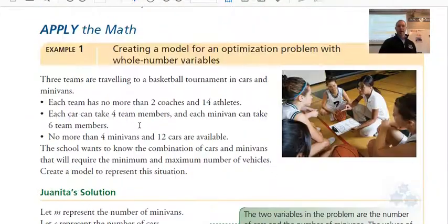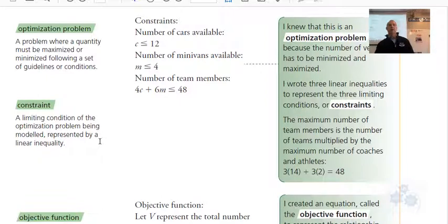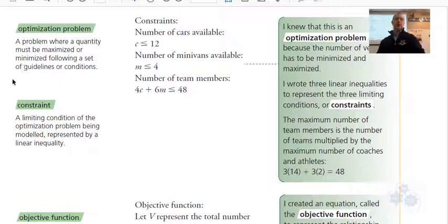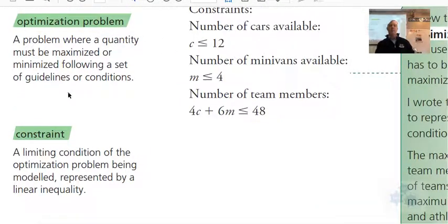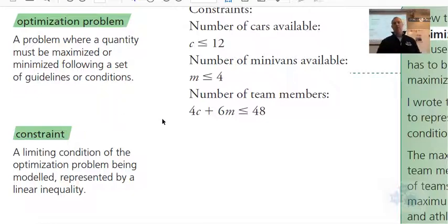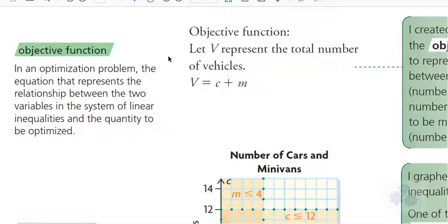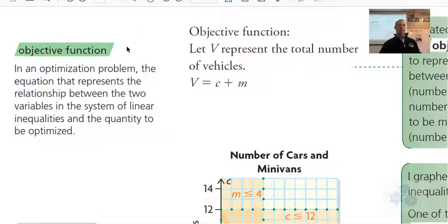Let's look at some definitions. Go ahead and copy these down or summarize them in your notes. An optimization problem is what I explained. A constraint is a limiting condition of the optimization problem. The objective function, in an optimization problem, is the equation that represents the relationship between the two variables in the system of linear inequalities and the quantity to be optimized.